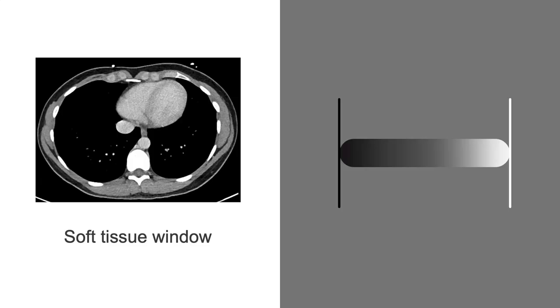Let's apply this to the soft tissue window, where the window width is 400 and the window level, or center point, is 50. This means that the grayscale is spread out over 400 Hounsfield units total, ranging from –150 to 250.